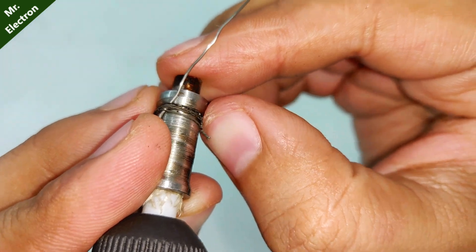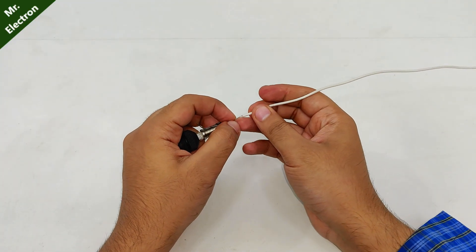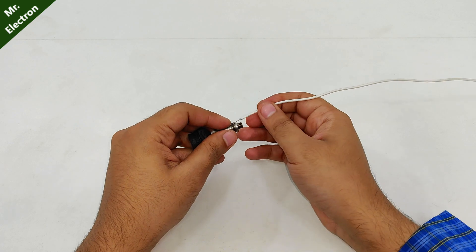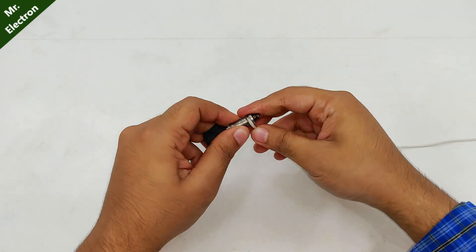Now press it like this on this side. Now comes the sliding of the sleeving back again as much as possible. Next comes winding it like a coil.